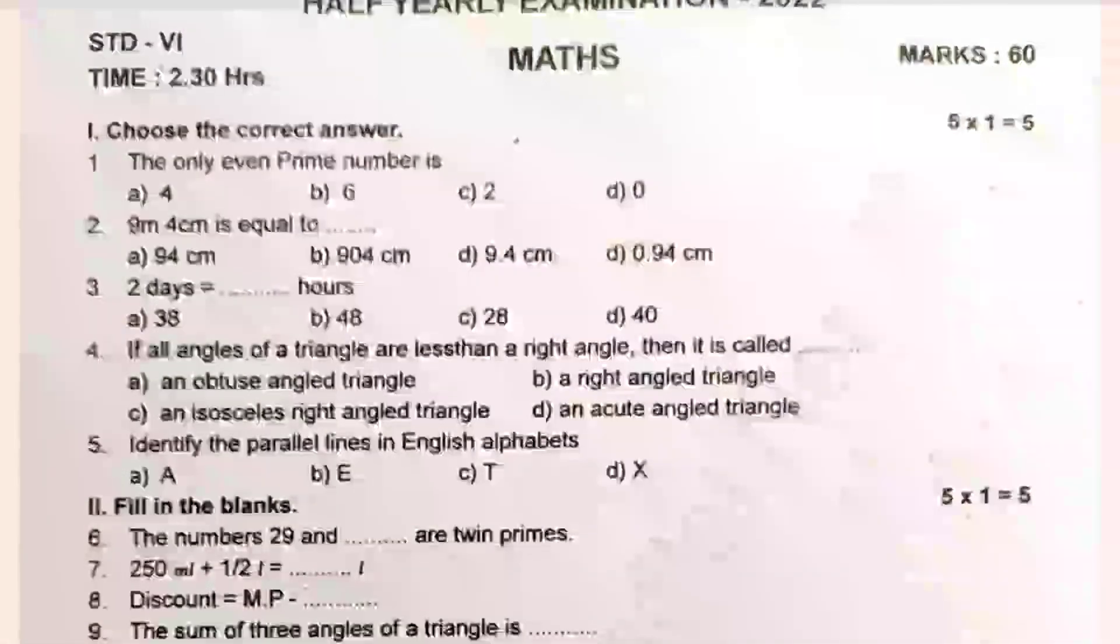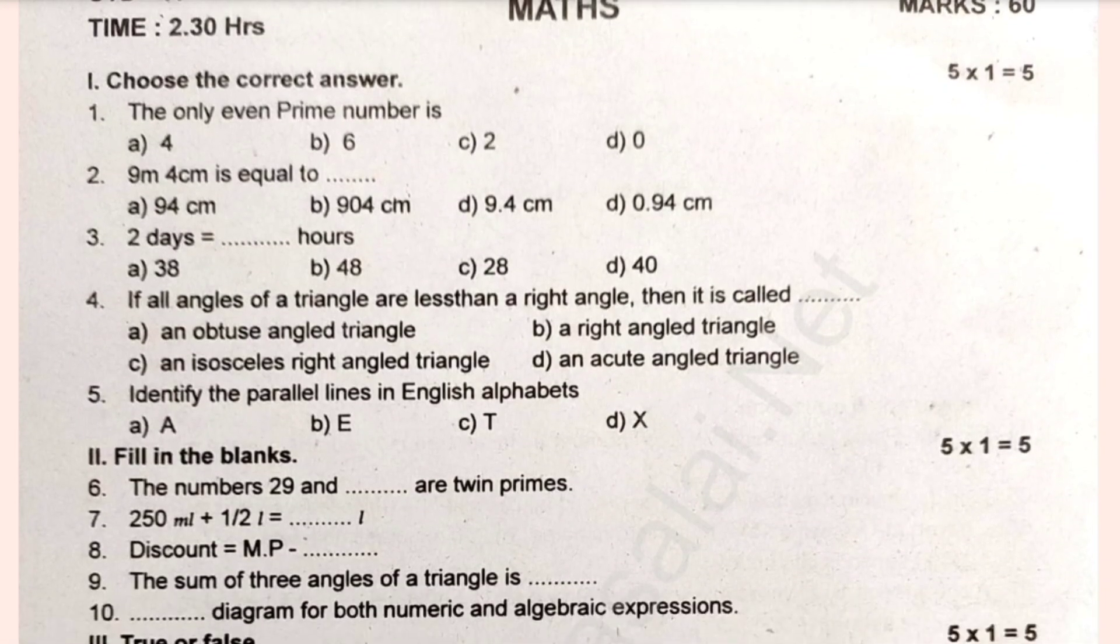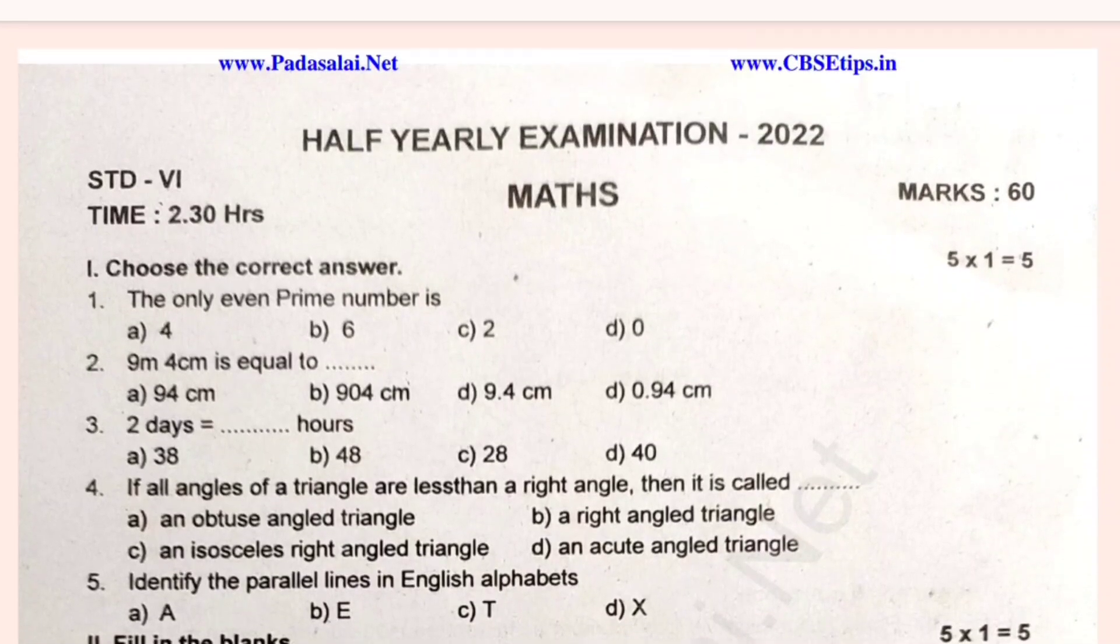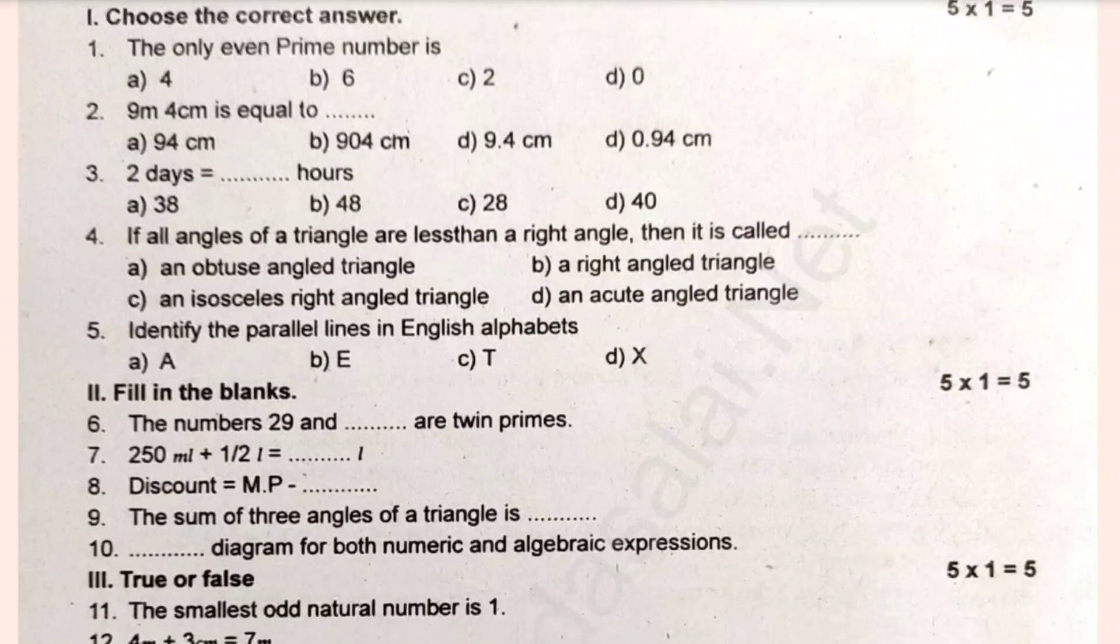Let's talk about these questions. Choose the correct answer. The only even prime number is what? 9m 4cm is equal to what? 2 days is equal to how many hours? If all angles of a triangle are less than a right angle, then it is called what? Identify the parallel lines in English alphabets.